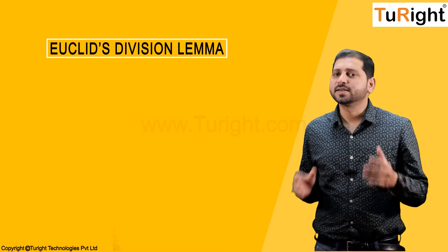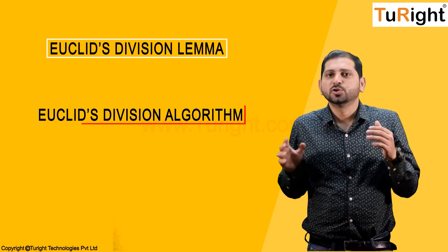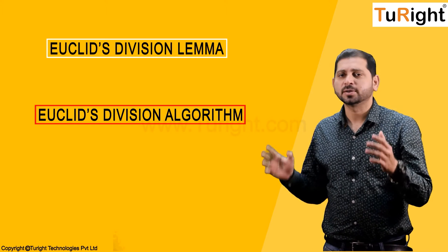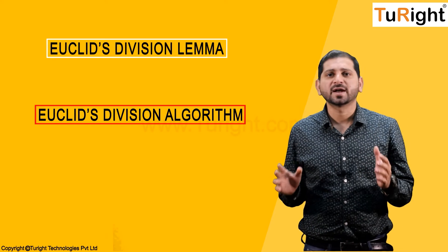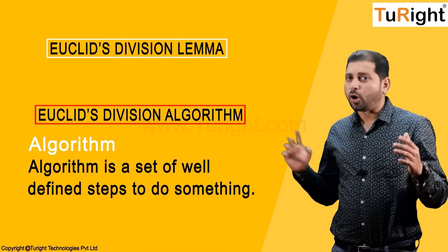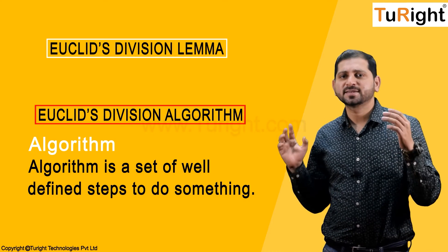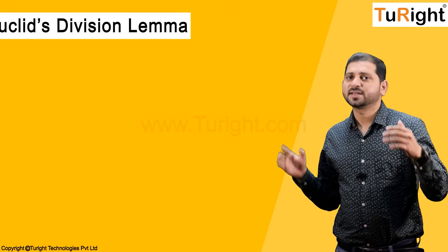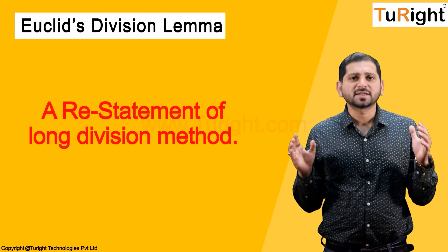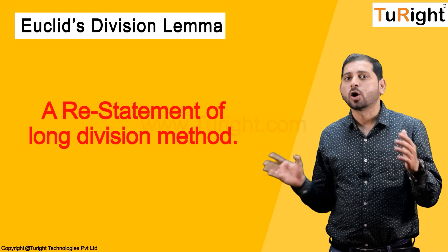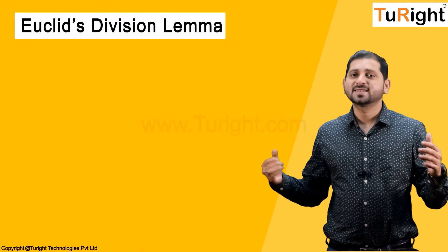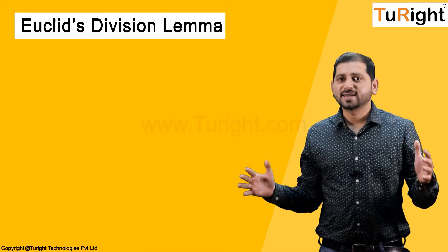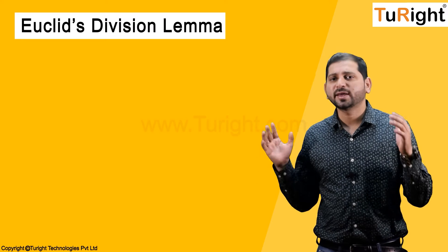Euclid's Division Lemma is also called Euclid's Division Algorithm. To understand the difference between these two terms: an algorithm is a set of well-defined steps to do something. Euclid's Division Lemma is a restatement of the long division method — the long division method we use has a formal statement given by Euclid.